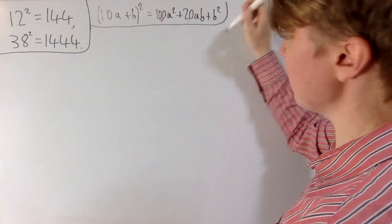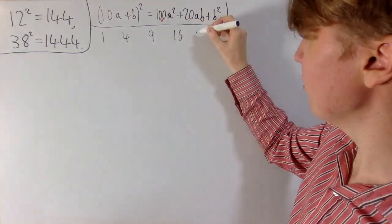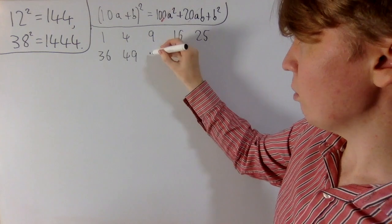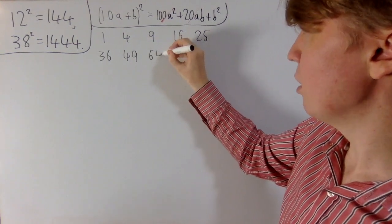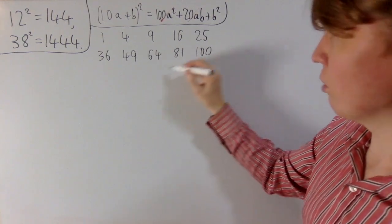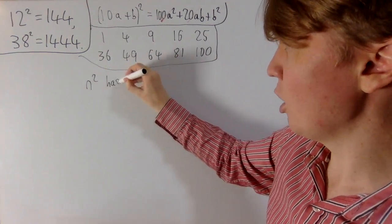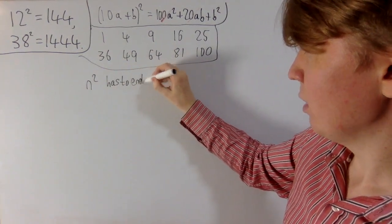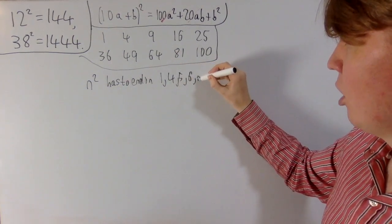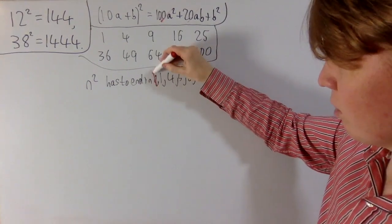There are 10 options for the last digit. If you consider 1 squared, 2 squared, 3 squared, 4 squared, 5 squared, and so on, and look at the last digit of each, you find that n squared has to end in one of 1, 4, 5, 6, or 9 — or 0, though we're not particularly interested in 0 for this problem.